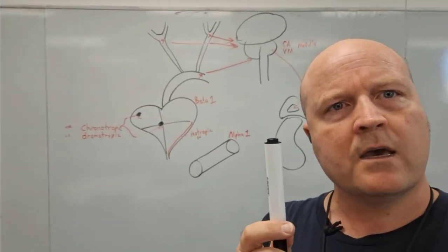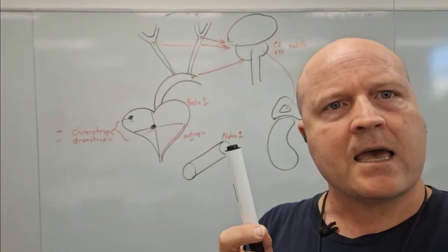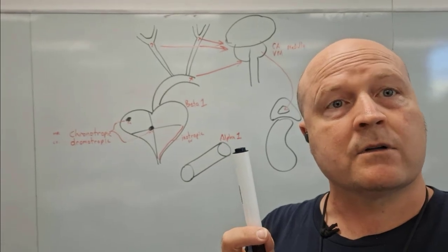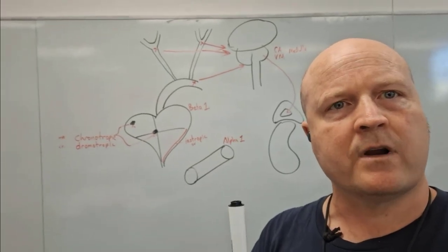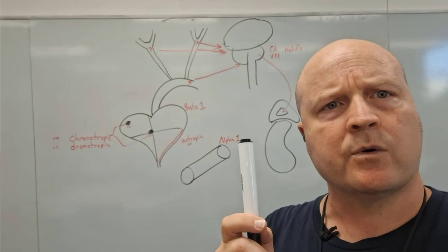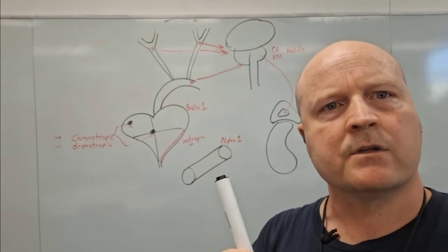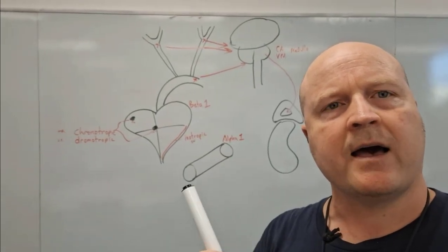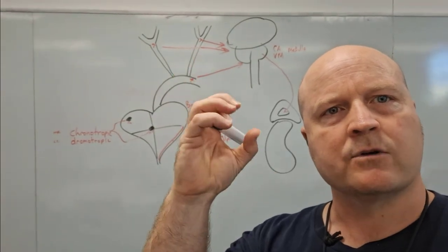Alright, so adrenaline and noradrenaline, also known as epinephrine and norepinephrine, is going to go to our alpha-1 receptors on the smooth muscle of our blood vessels and cause vasoconstriction.